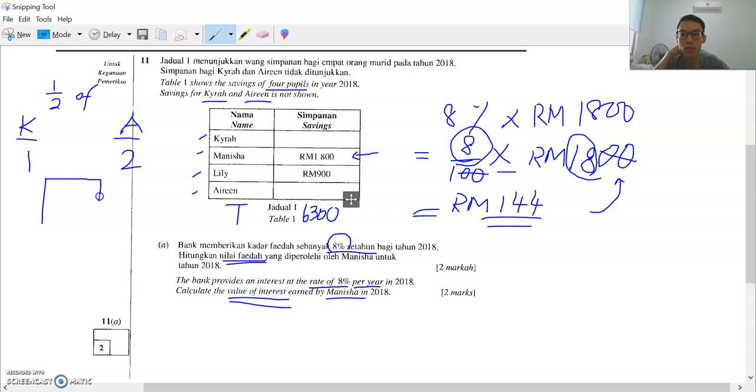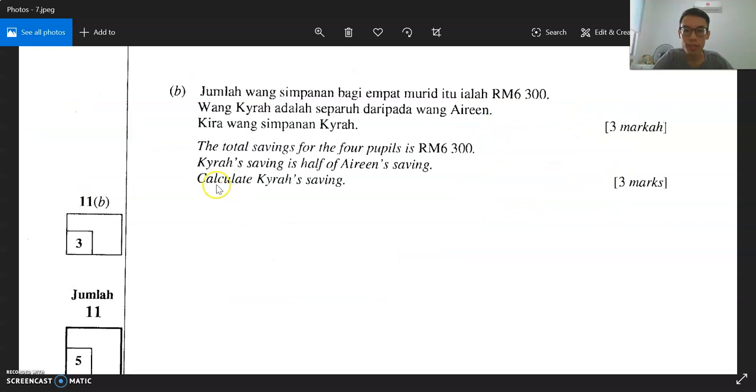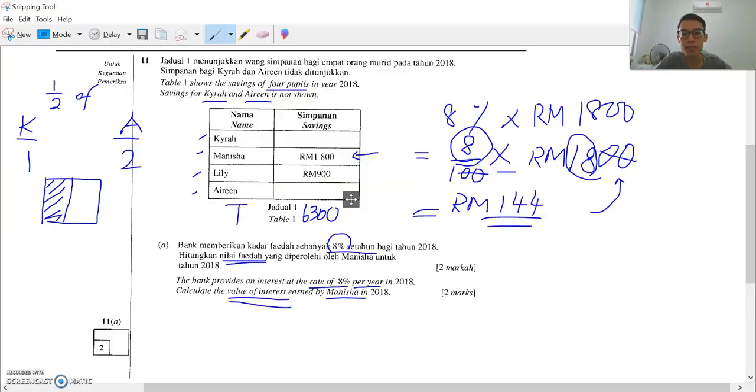If I draw two boxes here, separuh dia ialah satu saja. This one you have to remember. Question asks for Kaira's saving, so we need to find out Kaira's saving.